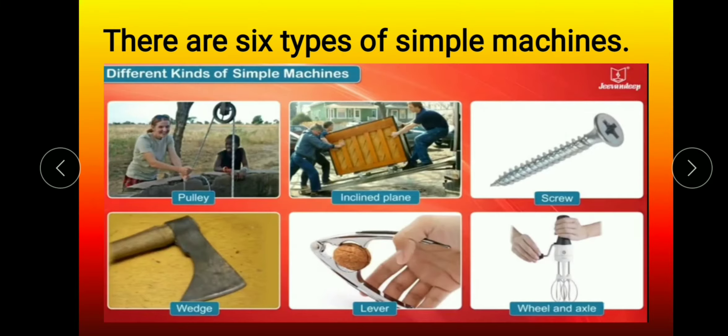There are six types of simple machines: pulley, inclined plane, screw, wedge, lever, and wheel and axle.